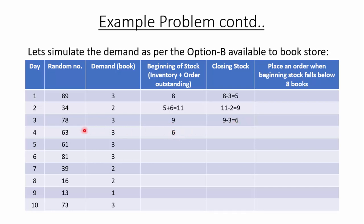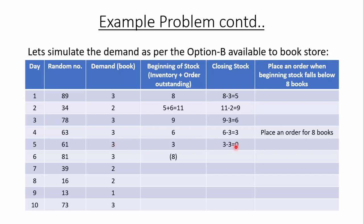At the beginning of day 4 the stock is 6, which is below 8, so we place an order for 8 books. Since the order is placed at the beginning of day 4, we will receive 8 books at the beginning of day 6. On day 4 the demand is 3, so the closing stock is 3. At the beginning of day 5 the stock is 3, demand is 3, so the closing stock is 0.